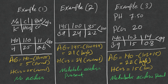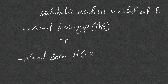Example 1: anion gap of 5 — normal or even low — and bicarb of 25 — normal. There is no metabolic acidosis here. This is the case where we can say for sure there is no metabolic acidosis. To rule out metabolic acidosis, we need two things: normal anion gap AND normal bicarb level.